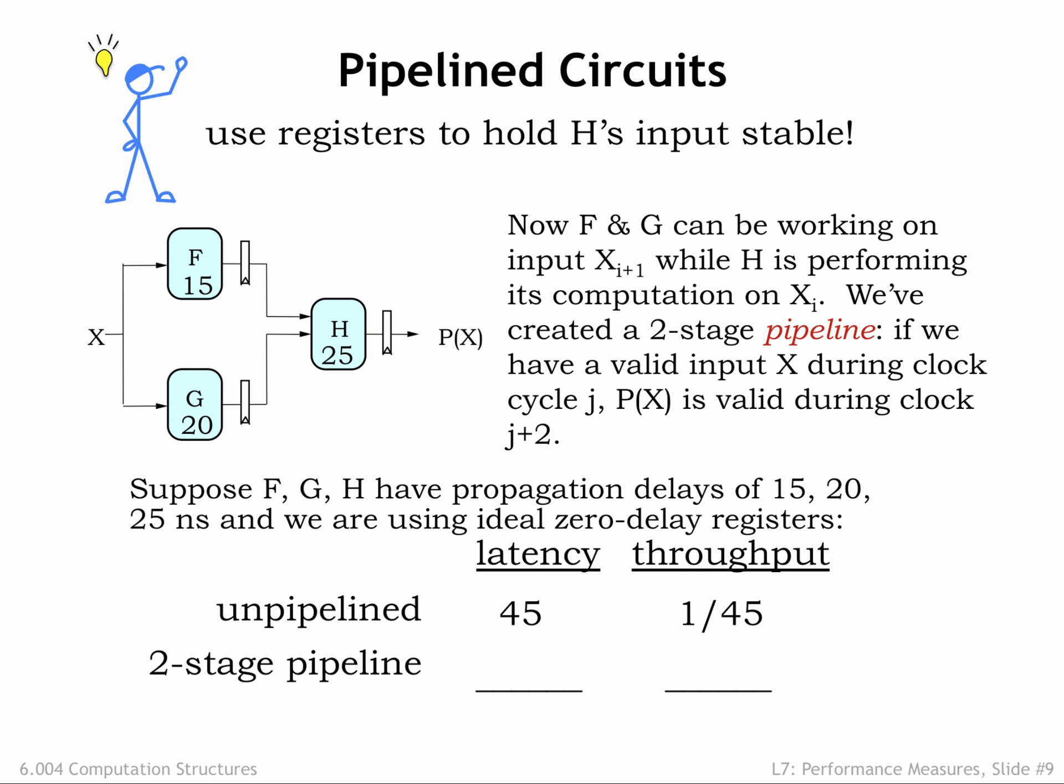The appropriate clock period for the sequential circuit is determined by the propagation delay of the slowest processing stage. In this example, the stage with F and G needs a clock period of at least 20 nanoseconds to work correctly, and the stage with H needs a clock period of 25 nanoseconds to work correctly, so the second stage is the slowest and sets the system clock period at 25 nanoseconds.